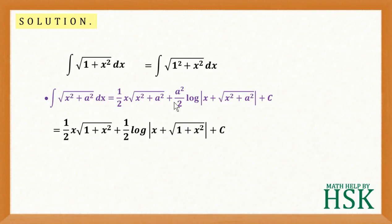Plus a square upon 2. Again, 1 square is 1. So 1 by 2 log of x plus square root of 1 plus x square plus C.